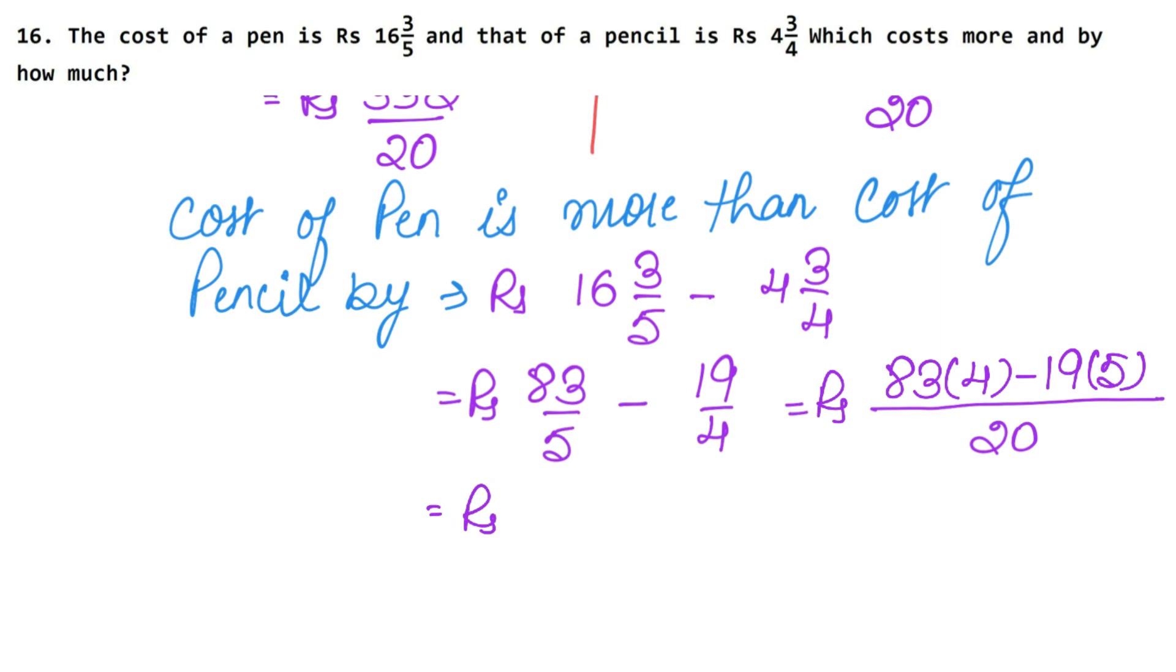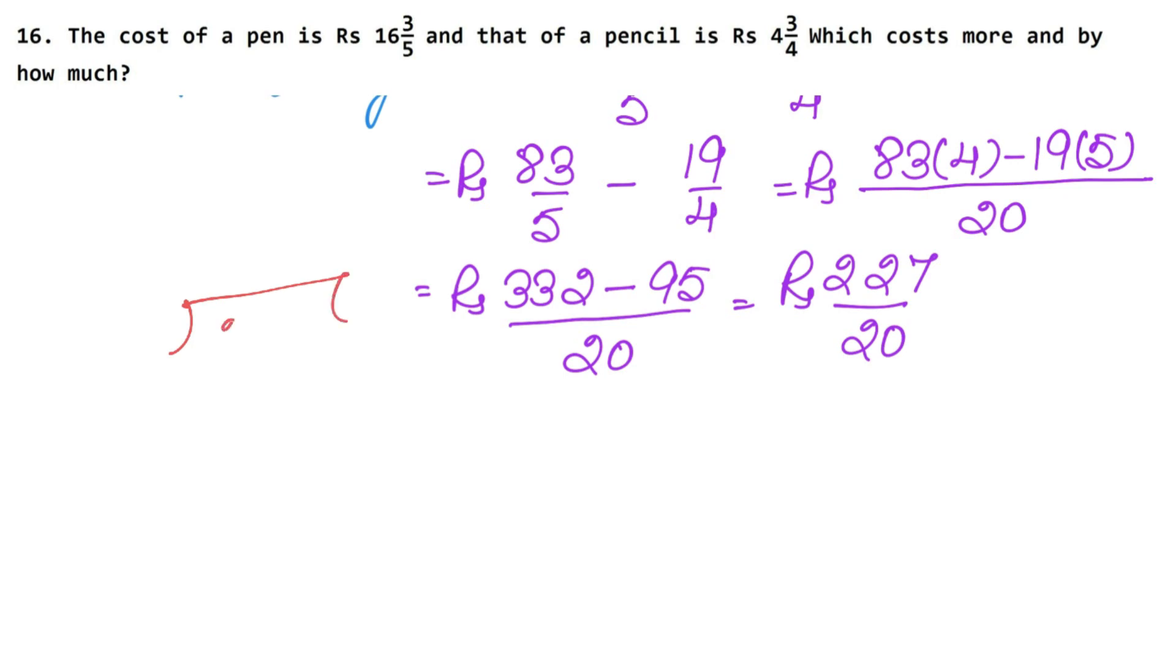So how much is it? Rupees as it is. 4 times 3 is 12 carry 1, 4 times 8 is 32, so 332 minus 19 times 5 is 95 upon 20. Rupees as it is. This means we can cancel. Now it will not cancel. So we will divide it in the mix fraction. So 227 divided by 20. 20 times 11 is 220. 227 minus 220 is 7 remainder. So how much is it? Rupees 11 whole 7 upon 20. So the answer is 11 whole 7 upon 20 rupees is the answer.